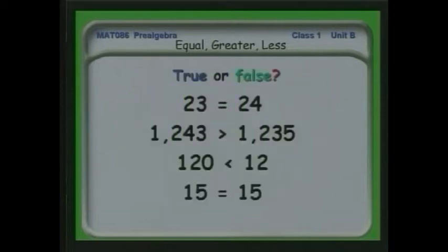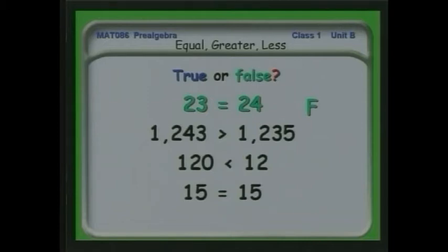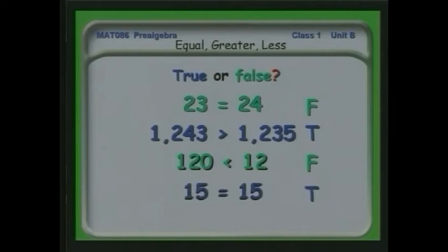Let's try a quick quiz. You decide whether these statements are mathematically true or false. 23 equals 24 — obviously false, the mathematical assertion is not correct. 1,243 is greater than 1,235 — that's true. 120 is less than 12 — and 15 equals 15 — pretty straightforward, it's true.